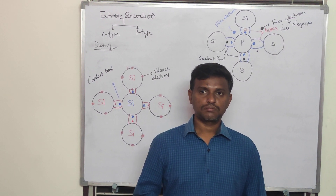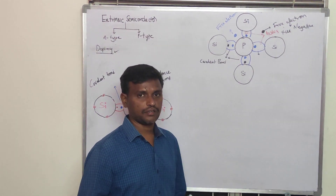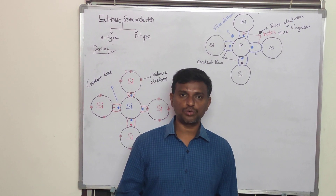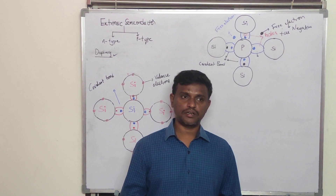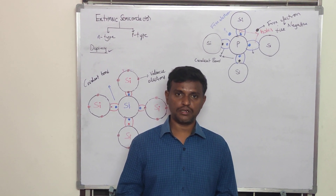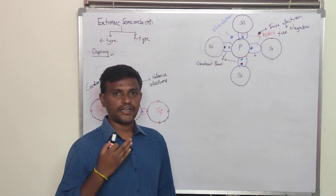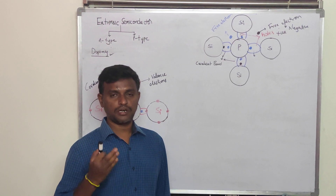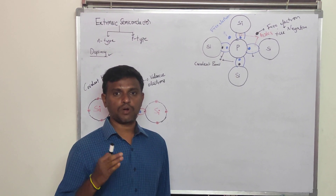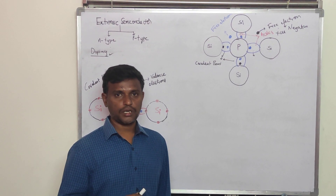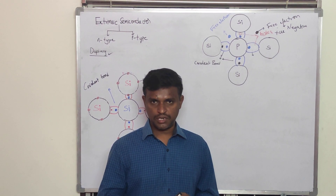Hello everyone. Here I am going to explain about the extrinsic semiconductors. We have basically two types of extrinsic semiconductor: one is N-type semiconductor and another one is P-type semiconductor. The doping process is used to form an extrinsic semiconductor.